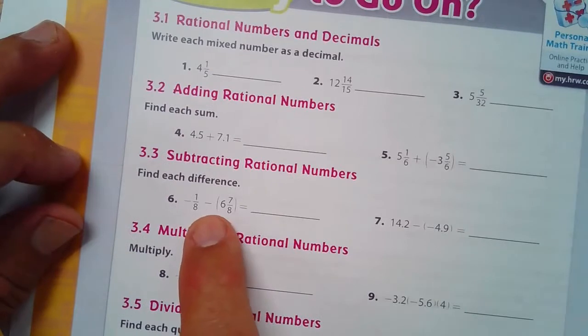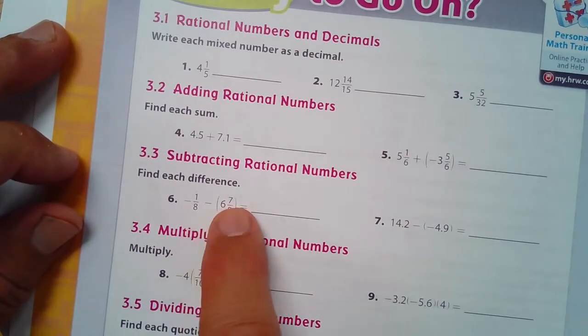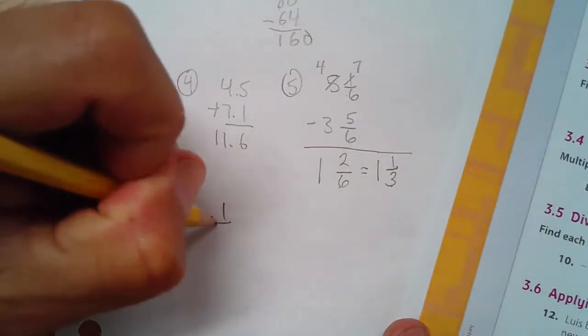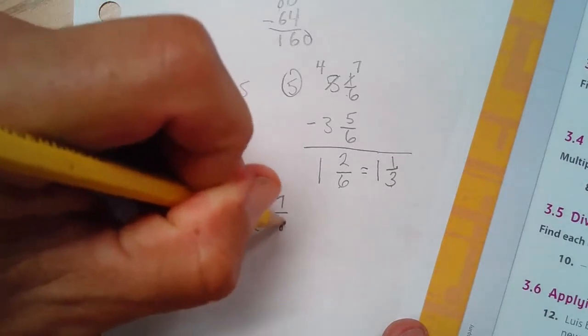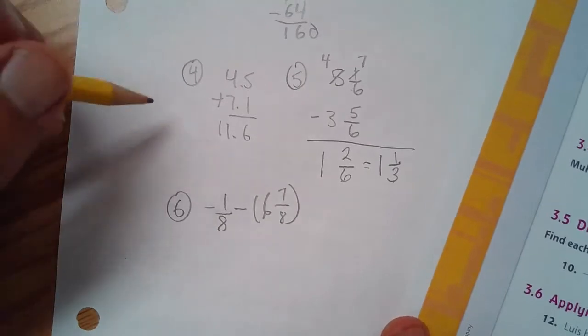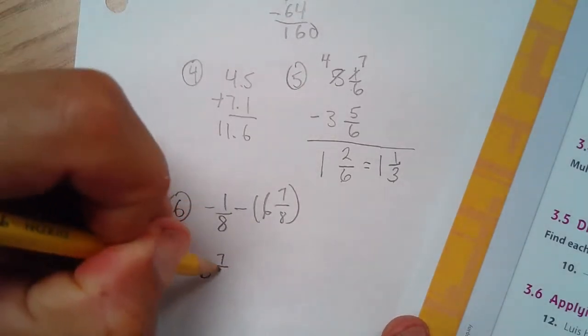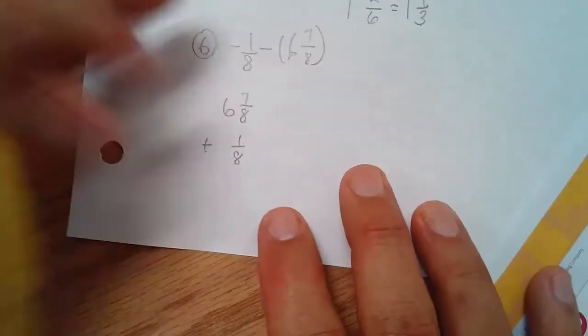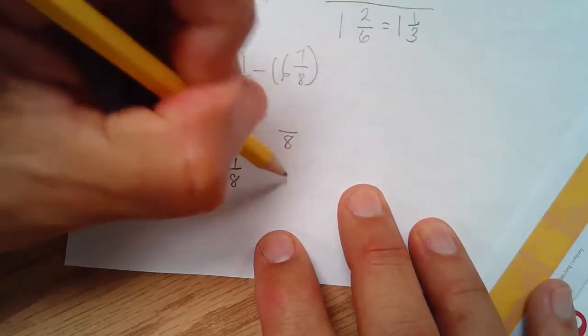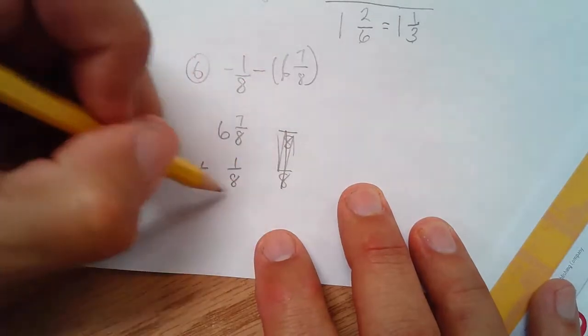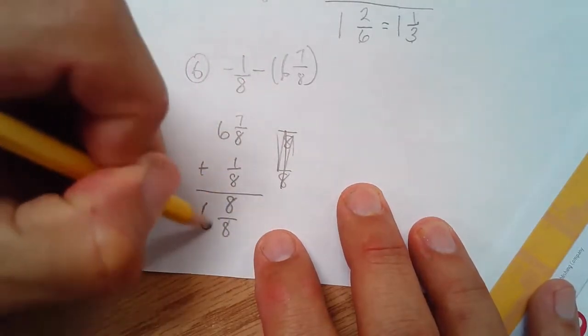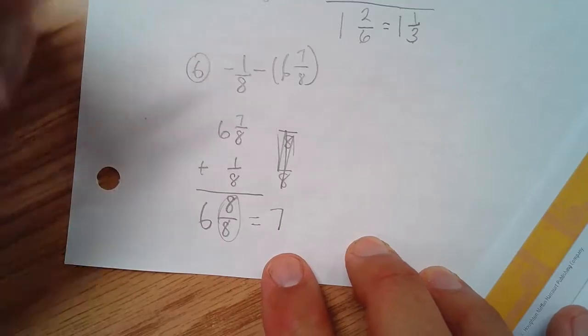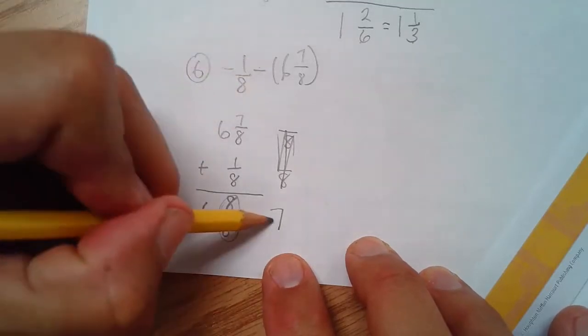Number six. I'm going to find the difference between these two. Looks to me like I'm going to add them both, and my answer is negative. Negative 1/8 minus 6 7/8. So I'm going to add them. 6 7/8 plus 1/8. I'm just turning it into addition because I need to know what that sum is. 7 plus 1 is 8/8. 6 and 8/8. Well, 8/8 is 1, so 6 plus 1 is 7. I have to remember that I was adding negatives, so my answer is negative 7.